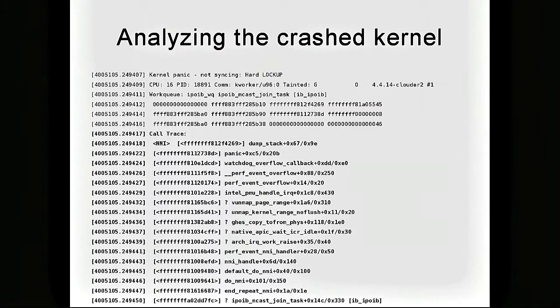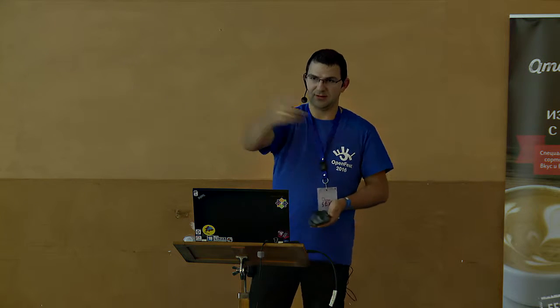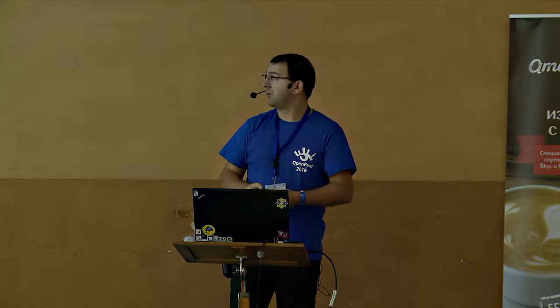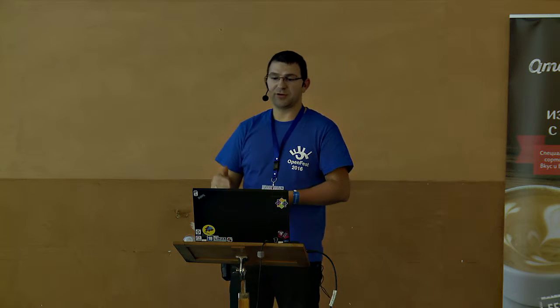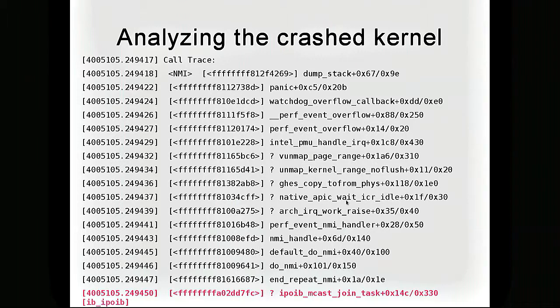Here's the call trace of another crash dump where the kernel panicked — 'not syncing: hard lockup' or similar. I'm showing the full call trace because the function that triggered the crash is the first one at the top: it's an InfiniBand IP-over-InfiniBand multicast function. All the other functions below it are helper functions to actually reboot the machine. So here's the actual call trace: the function that broke the kernel is at the top, and everything after that was triggered by this function to reboot the machine.